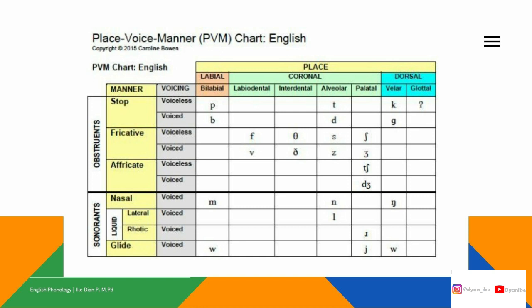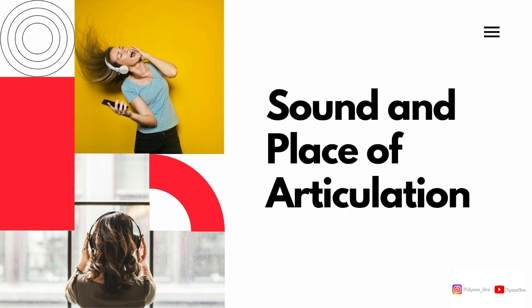I think you can read the table of place of articulation by yourself — which sounds are stop, fricative, or nasal; which are voice or voiceless; and from which place of articulation they are produced. That's it for this meeting. I hope you get the idea of sound and place of articulations. Don't forget to check the description box below — you have exercises to submit by email. I'll see you next week. Thank you for watching.